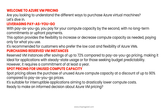Reserved VM instances offer savings of up to 72% compared to pay-as-you-go pricing, making it ideal for applications with steady state usage or for those seeking budget predictability. However, it requires a commitment of at least a year. Spot pricing allows the purchase of unused Azure compute capacity at a discount of up to 90% compared to pay-as-you-go prices, suitable for interruptible applications aiming to drastically lower compute costs.